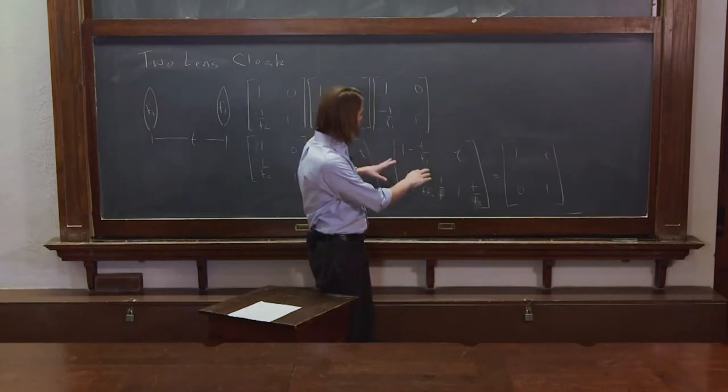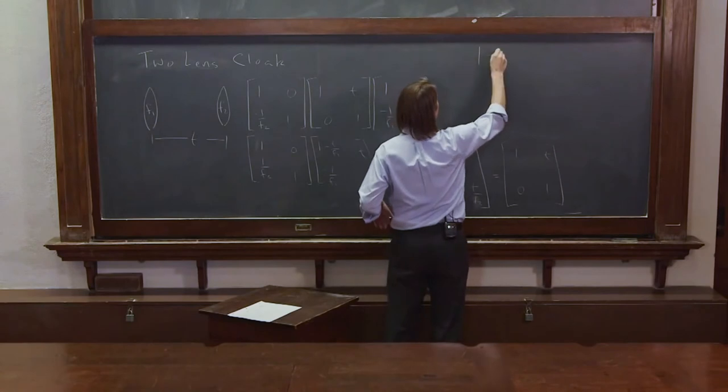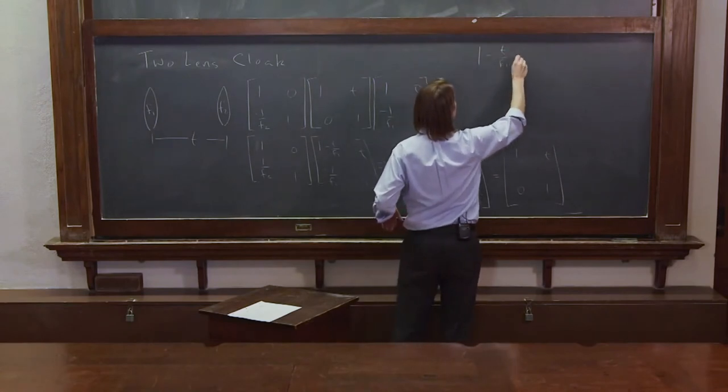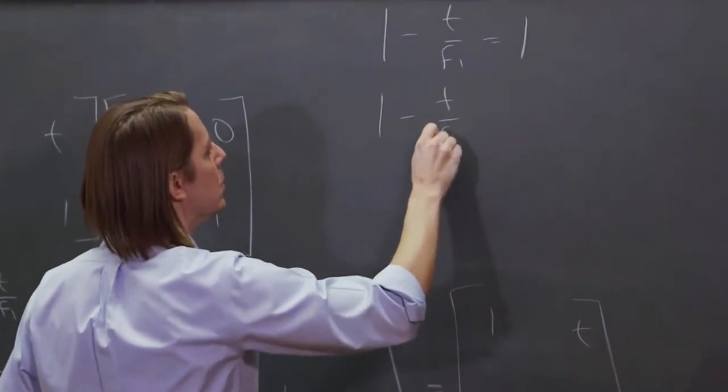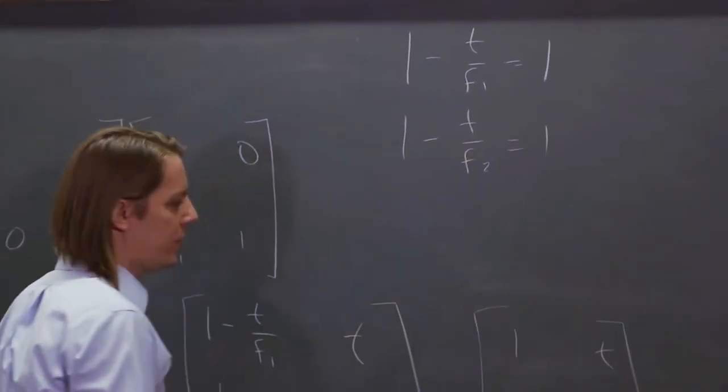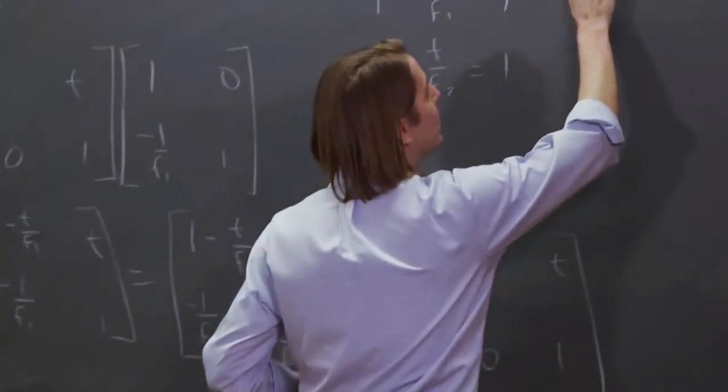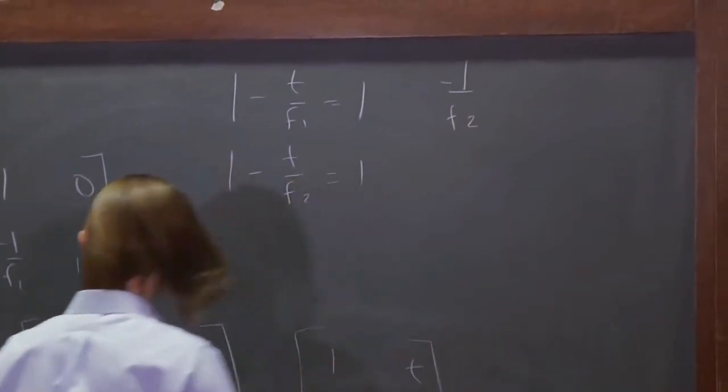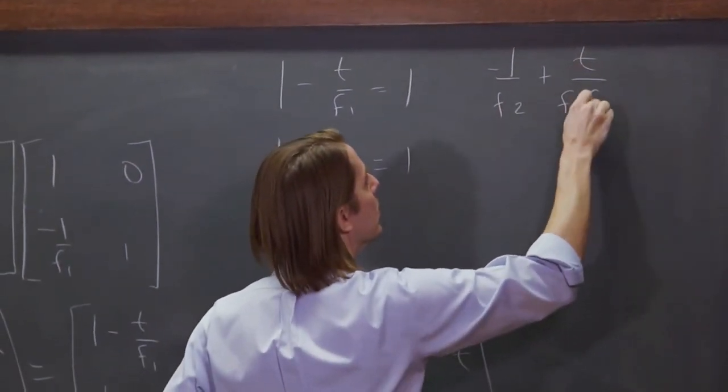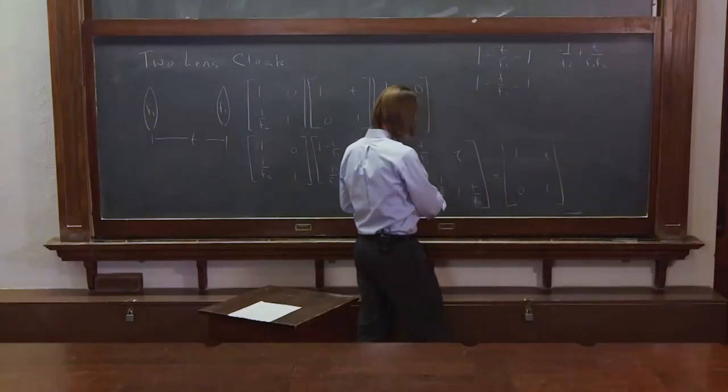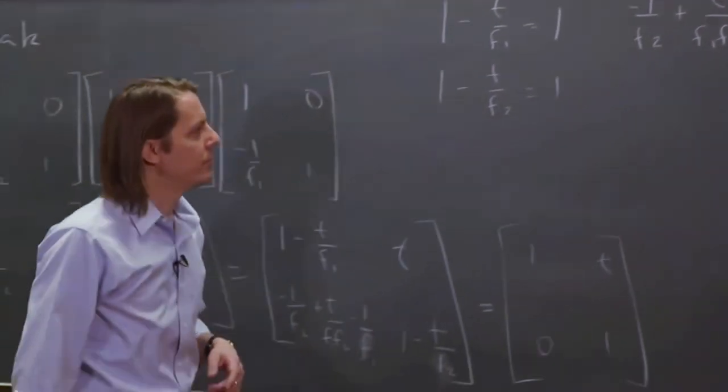So this tells us our required condition, 1 minus T over F1 has to be equal to 1. And 1 minus T over F2 also has to be equal to 1. And minus 1 over F2 plus T over F1 F2 minus 1 over F1 has to be equal to 0.